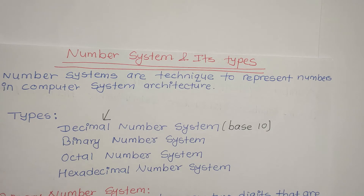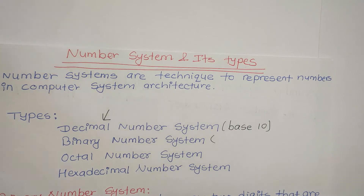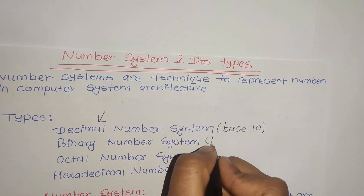In the case of computer system architecture, the binary number system is used. All computer machines are machine-oriented. They only use 0 and 1. So binary number system is machine-oriented — in machine language, 0 and 1 are the digits. The first machine language stores data in binary number system. It has only 2 digits, and its base is 2.